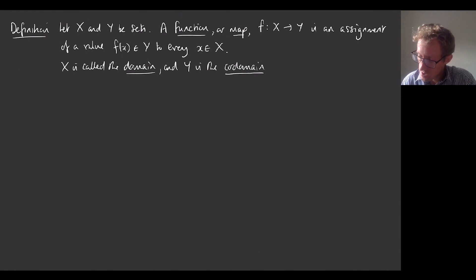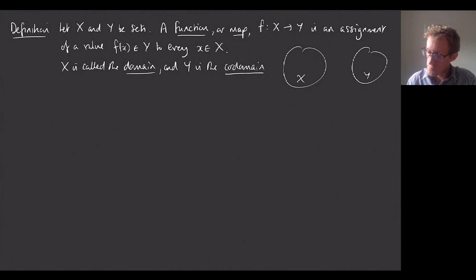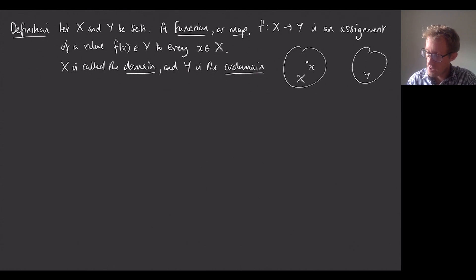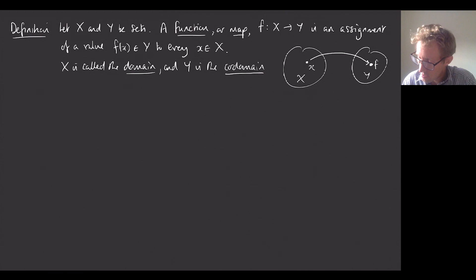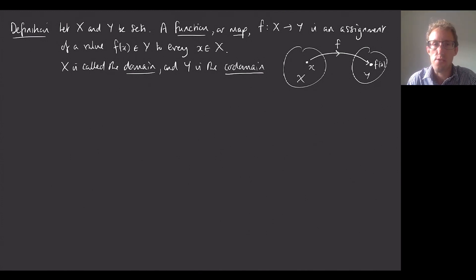I'd like to think of this in terms of a picture. If this is the set X and this is the set Y, then the function takes any element in the set X and assigns it — maps it — to some element in the set Y. So this would then be f(x), and the mapping is the function.